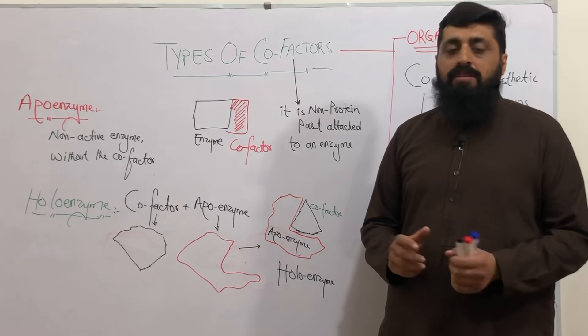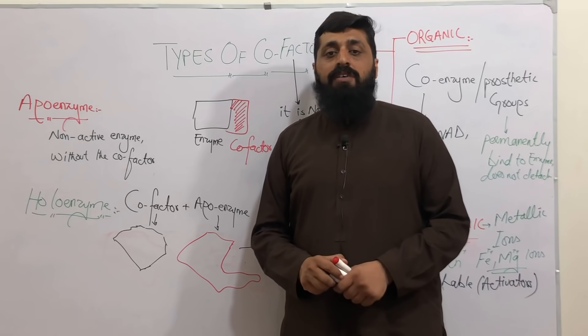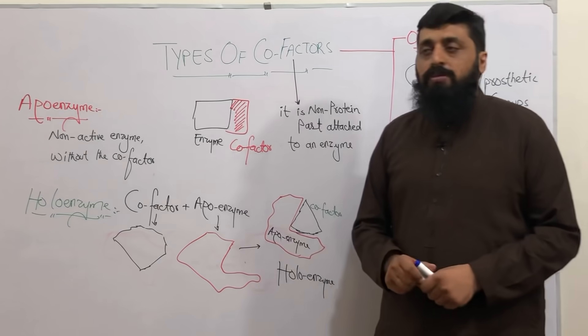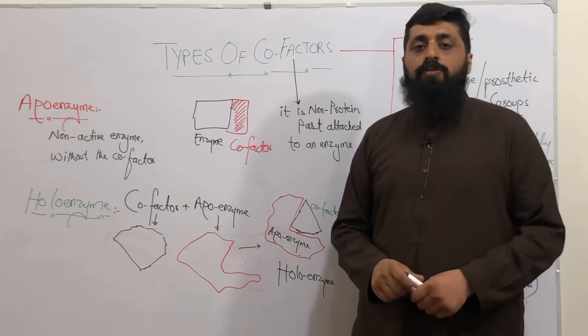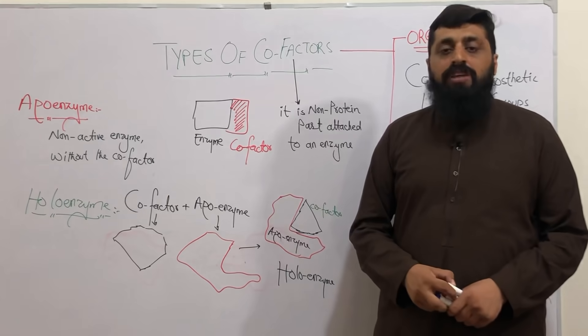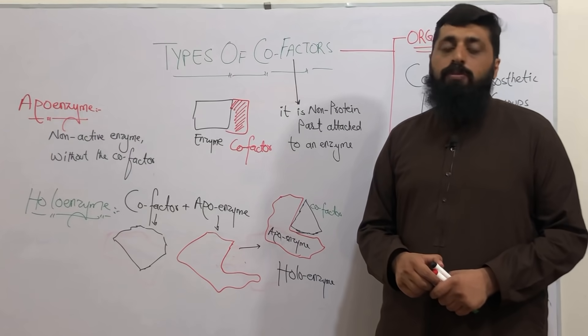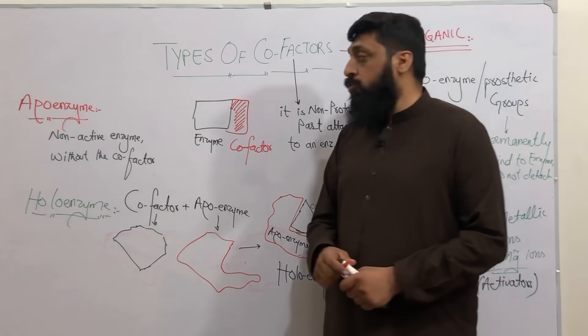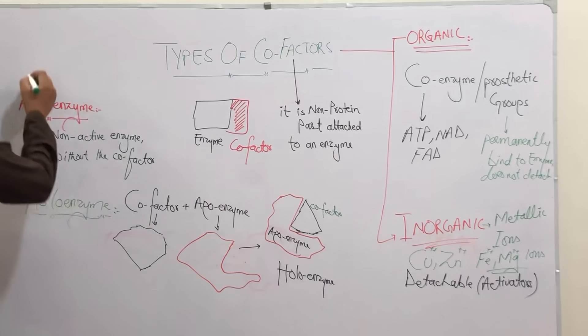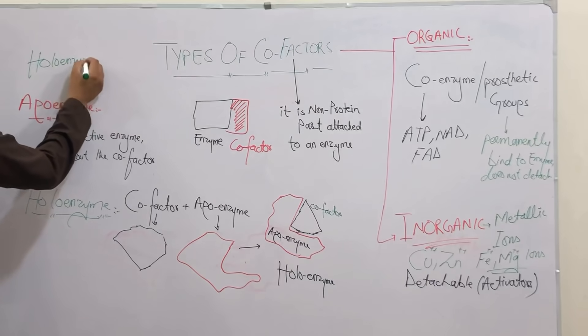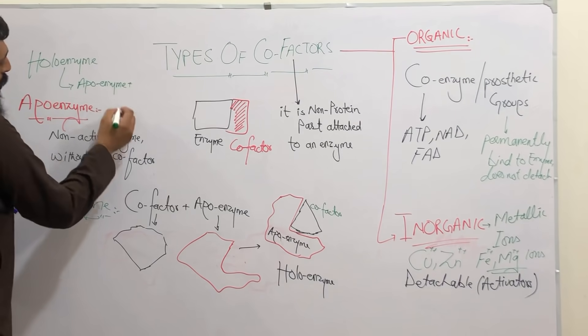The enzyme without the cofactor part, where it does not perform any function, is called apoenzyme. When apoenzyme ke saath a cofactor attaches, then it becomes functional - then we call it as holoenzyme. What is holoenzyme? It is basically apoenzyme plus the cofactor.